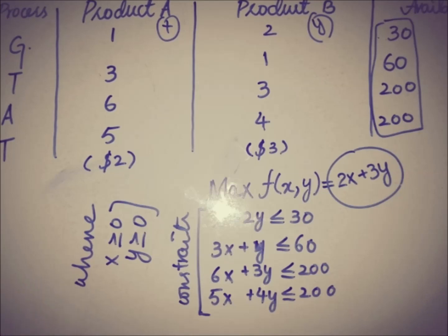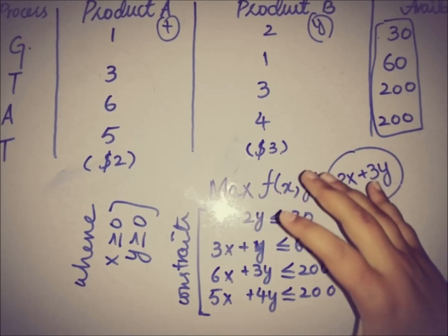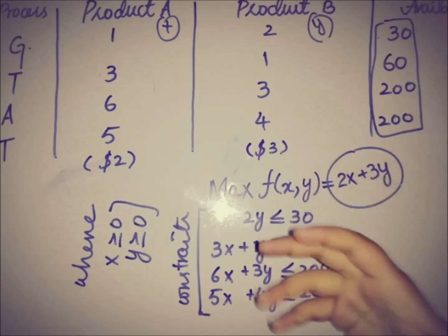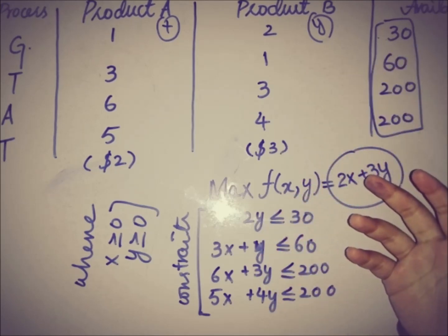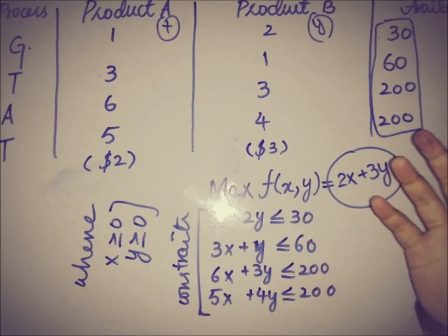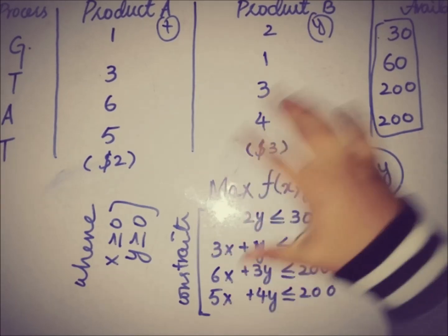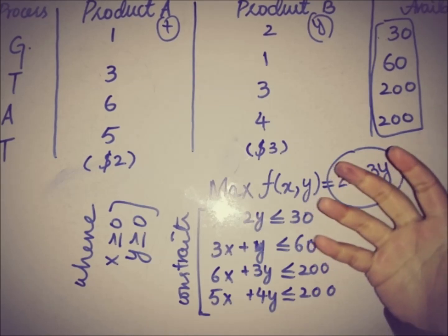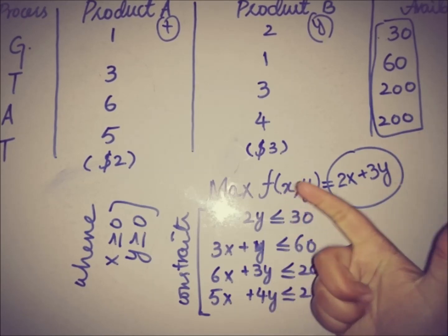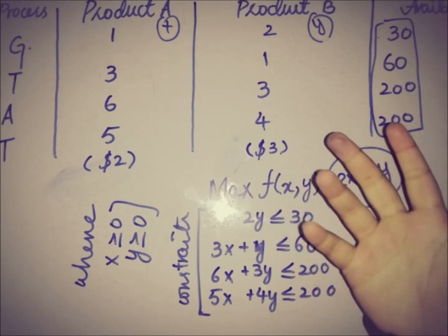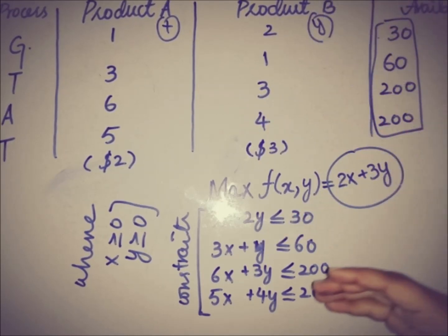So this is the model of this linear programming problem. The question is: how can we solve it and maximize the profit? There are many techniques in linear programming that we can use according to the situation. For example, we have the graphing technique, the simplex method, the Big M technique, the two-phase method, and many others — each suited to a certain type of problem.